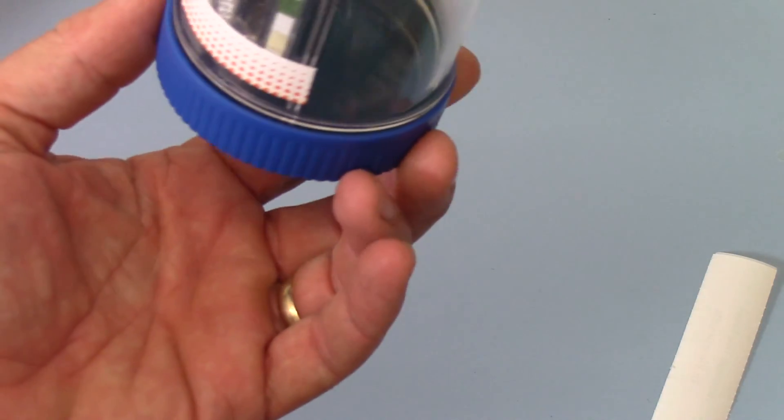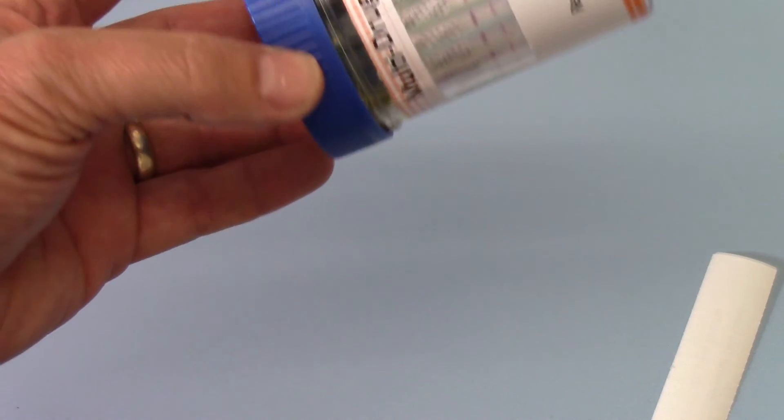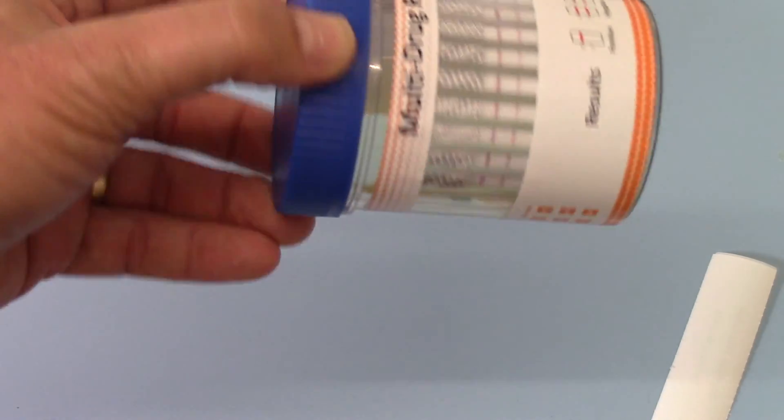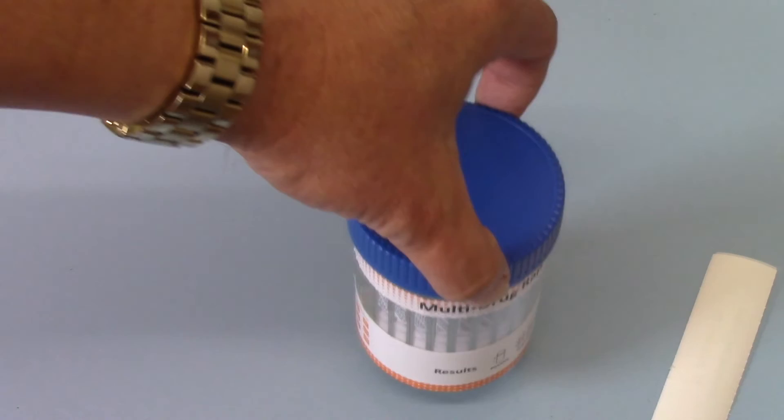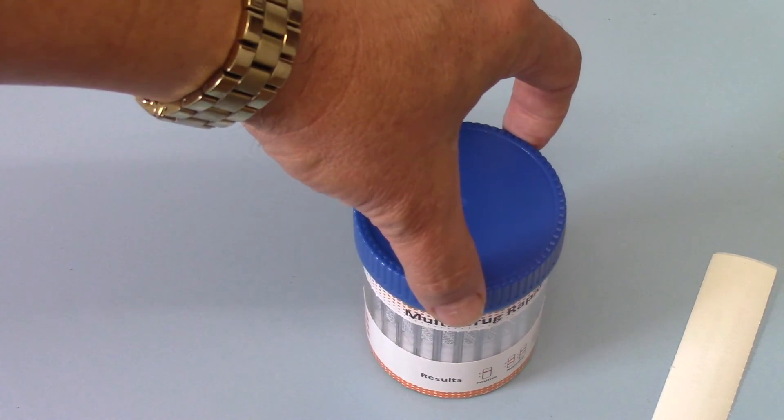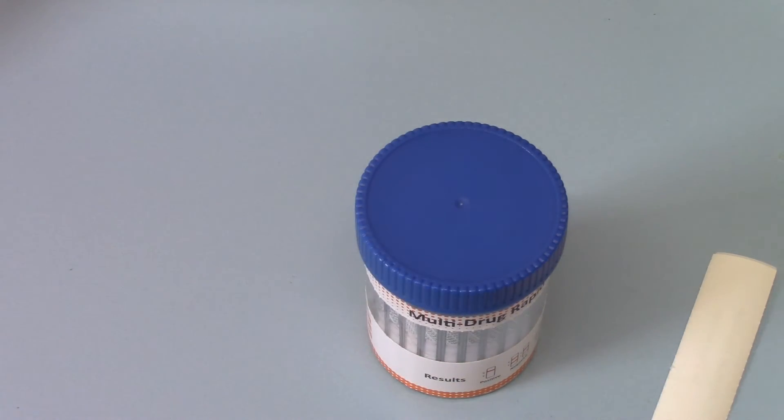If we just invert this for you, you'll see that the seals on these cups are beautifully manufactured, there's no leakage, and the urine sample is completely contained within the cup.